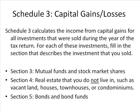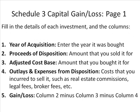Schedule 3 calculates the income from capital gains for all investments sold during the year. For each investment, fill in the section that describes what you sold: Section 3 for mutual funds and stock market shares, Section 4 for real estate you do not live in such as vacant land, houses, townhouses, or condominiums, and Section 5 for bonds and bond funds. Fill in the details: year of acquisition (year bought), proceeds of disposition (amount sold for), adjusted cost base (amount bought for), outlays and expenses from disposition (costs to sell such as real estate commissions, legal fees, broker fees), and gains or loss, which equals column 2 minus column 3 minus column 4.